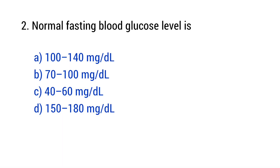Question number 2: Normal fasting blood glucose level is? The right answer is option B — 70 to 100 mg per deciliter.